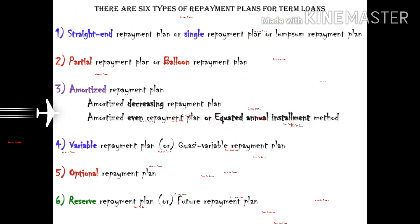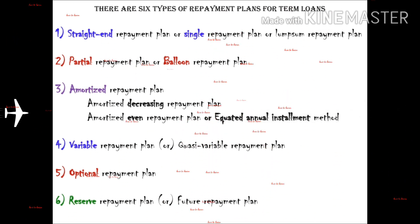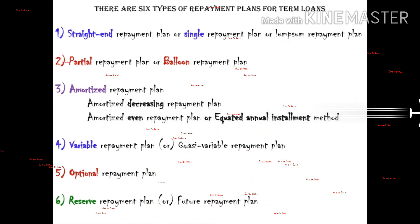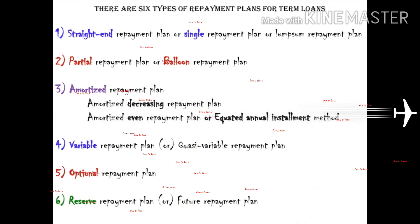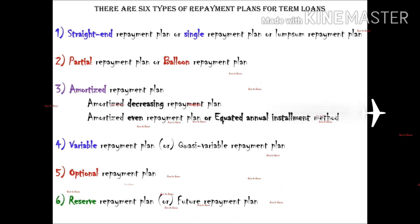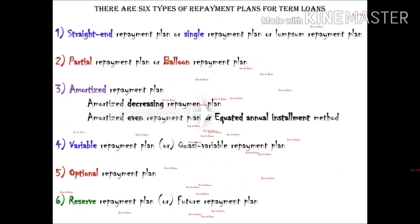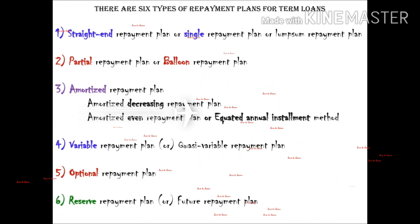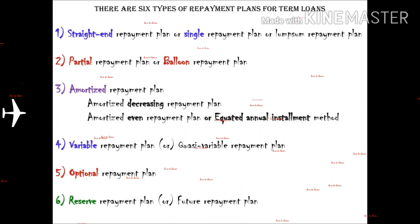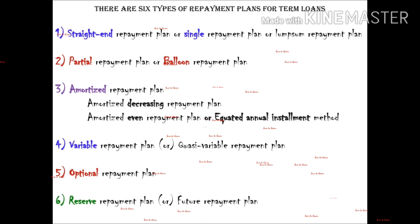There are 6 types of repayment plans for term loans. The first one is the straight-end repayment plan, the second one is the partial repayment plan, the third one is the amortized repayment plan, and the last one is the reserve repayment plan.